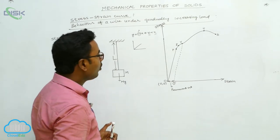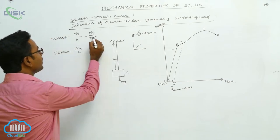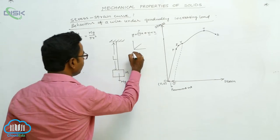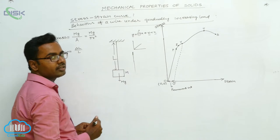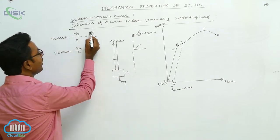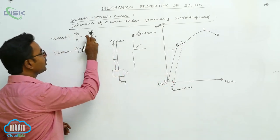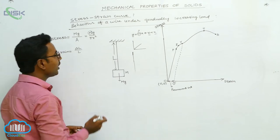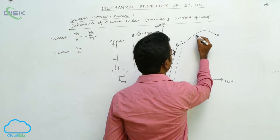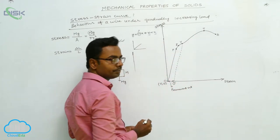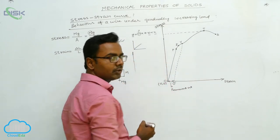Without increasing the load, the wire becomes thinner and thinner — its radius gradually decreases. As the radius decreases, stress increases, even though we are not changing the mass attached to the wire. This thinning and increasing stress continues until point T is reached, where the stress is maximum. That maximum stress is called tensile stress.